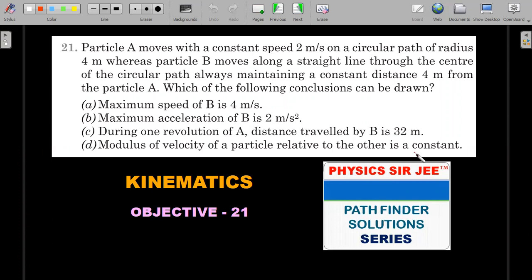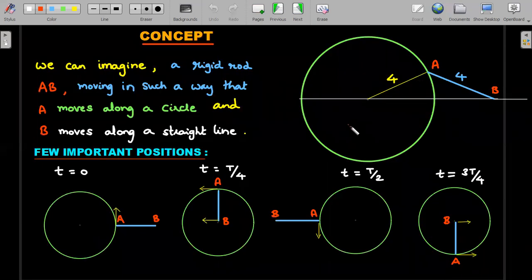First of all, the concept I'd like to introduce is the idea that since AB's length is 4 meters and also the radius of this particular circular motion for A is 4, and particle A is moving along a circle and particle B is moving along a straight line - he said in the question it's passing through the center - so I can choose any arbitrary line. I've chosen an x-axis like this for B's motion. Also, I would imagine in my mind that A and B are connected by a rigid rod.